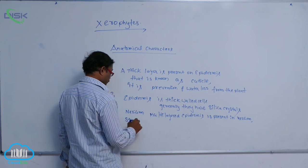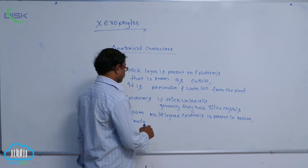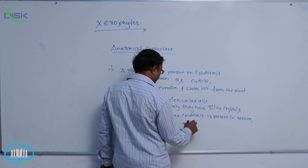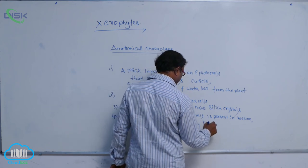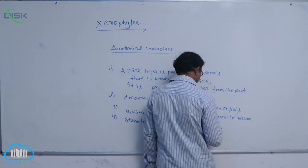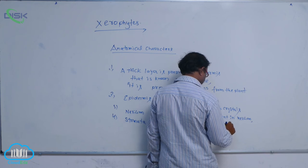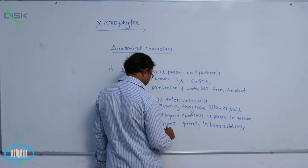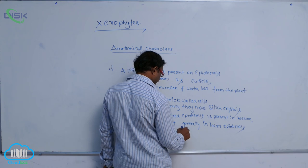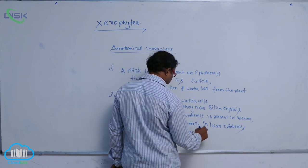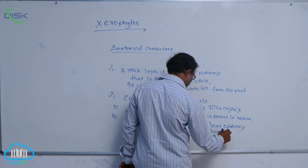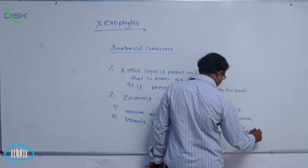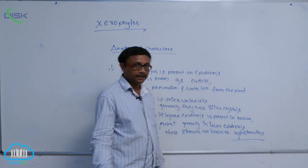Stomata is present generally in lower epidermis. These stomata are known as hypostomatous. Hypostomatous means stomata is present on the lower epidermis.